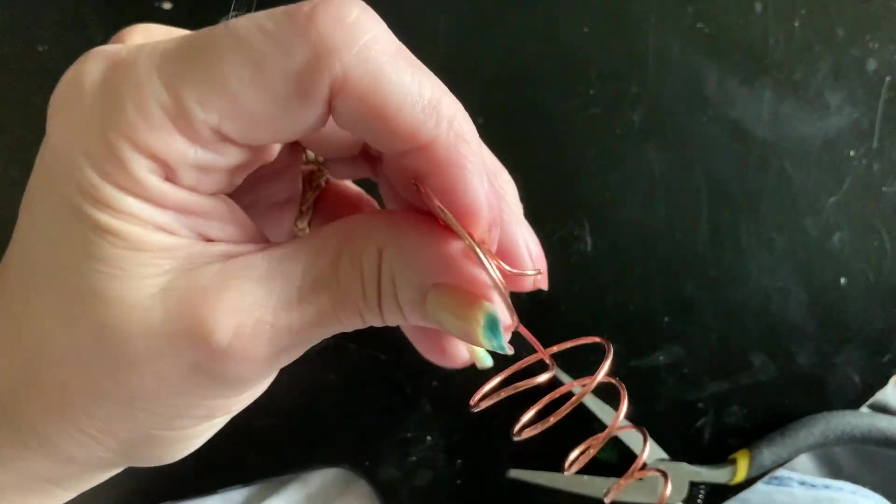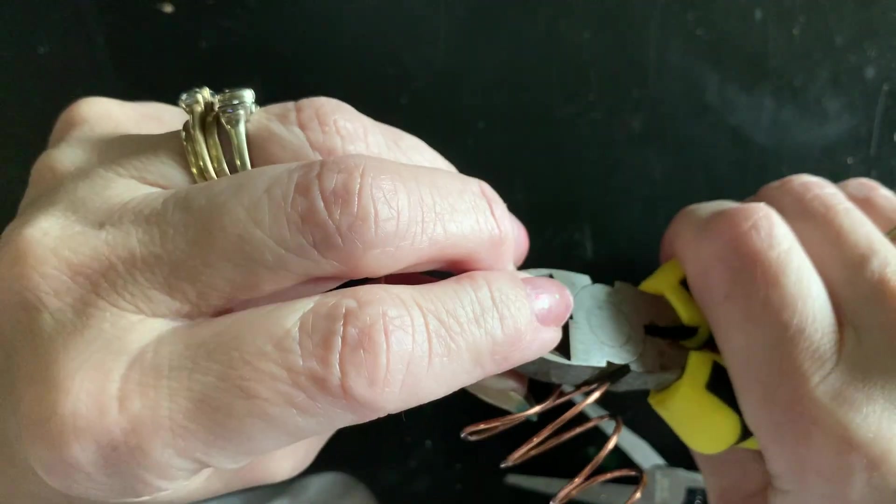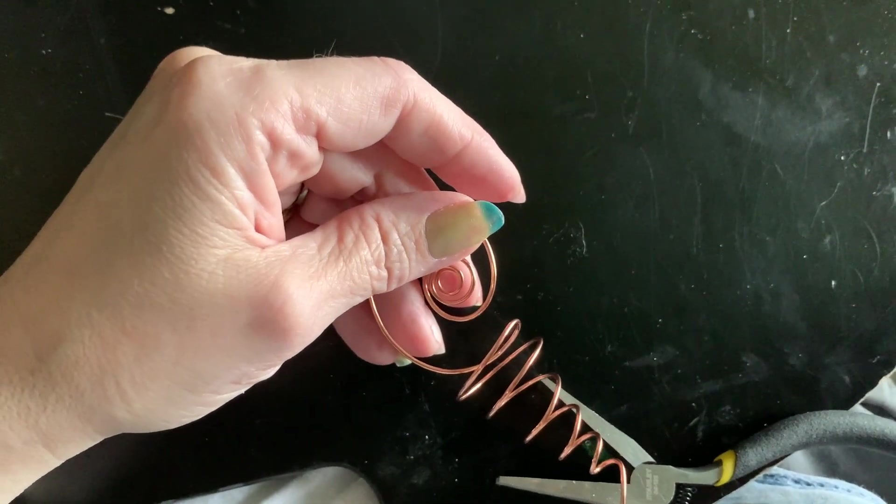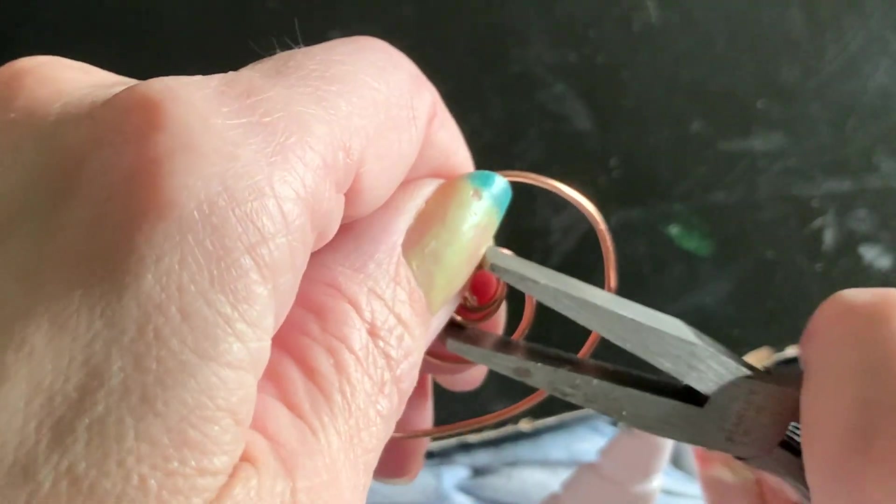I'm using various pliers to get the coil the way I want. I cut the end off because I decided I didn't want to have that extra sticking out.